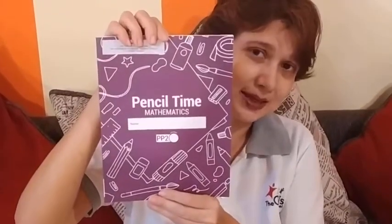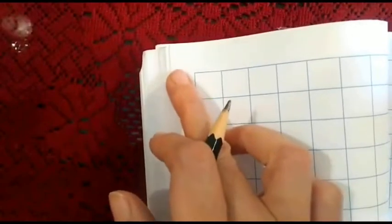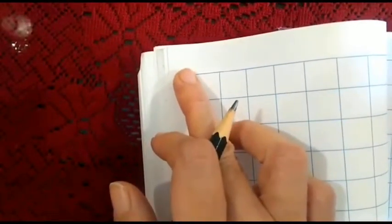Write numbers 1 to 50 in max pencil time. To write numbers 1 to 50 we will take a center spread page. On the left hand side page in top left corner we are going to write today's date.